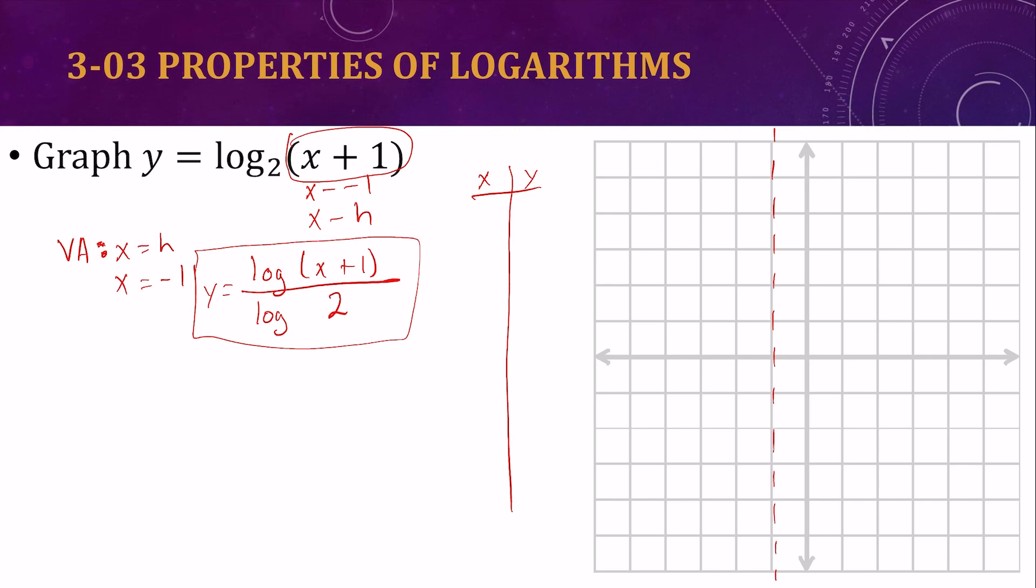And it gives me the table. Negative 2, negative 3, negative 4 are all errors. Negative 1 is an error. That's my asymptote. 0, 0. 1, 1. 2, 1.58. 3 is 2. 4 is 2.32. 5 is 2.58. And 6 is 2.81.